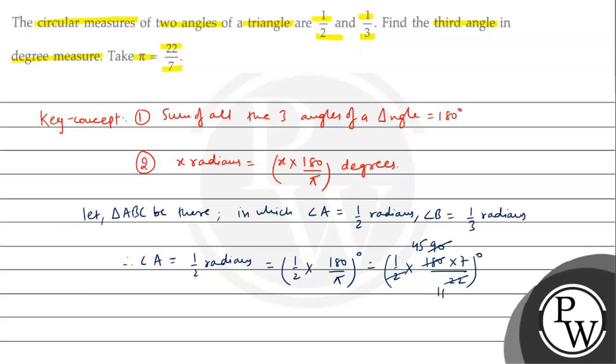It will be 11. So, what will happen? 7 into 5 is 35, it will be 3, 7 into 4 is 28, it will be 3, it will be 315 upon 11 degrees. This angle A has come to us.